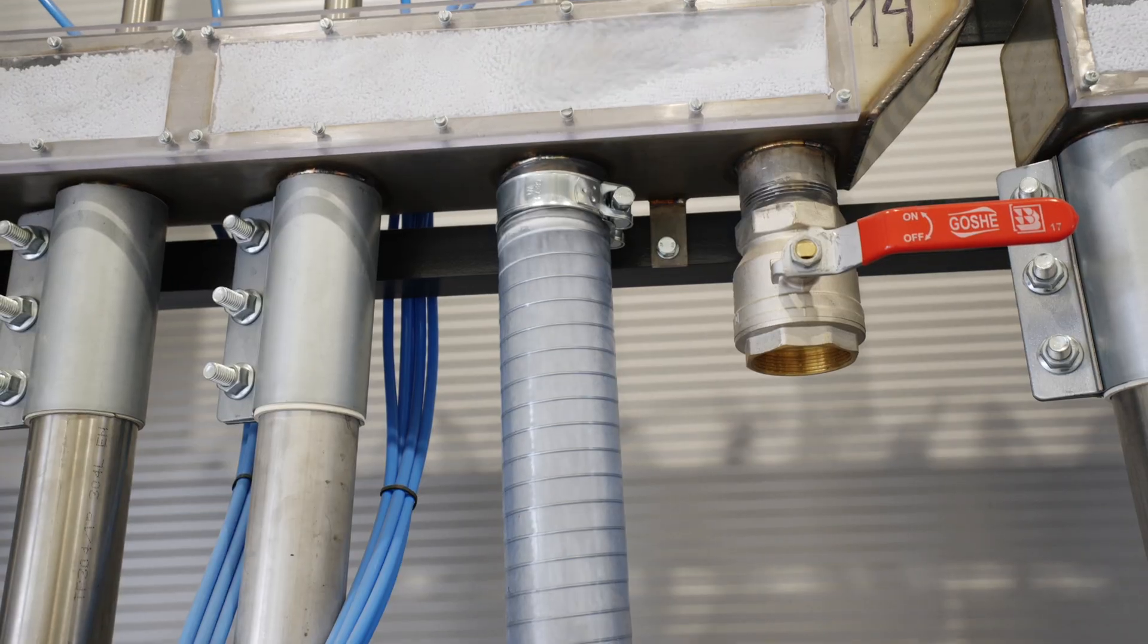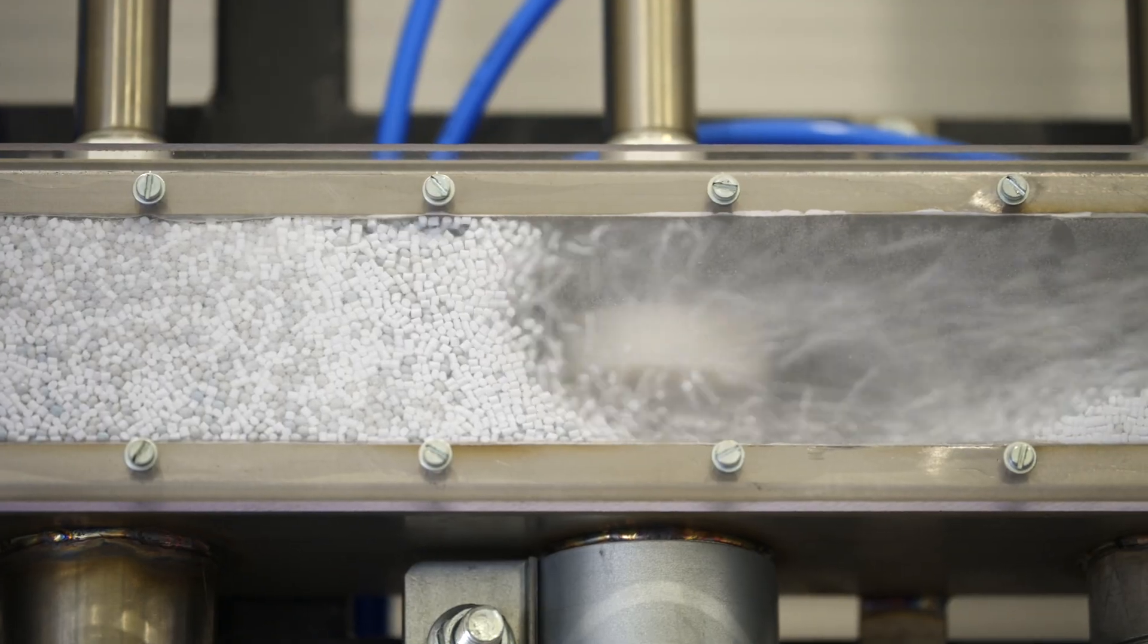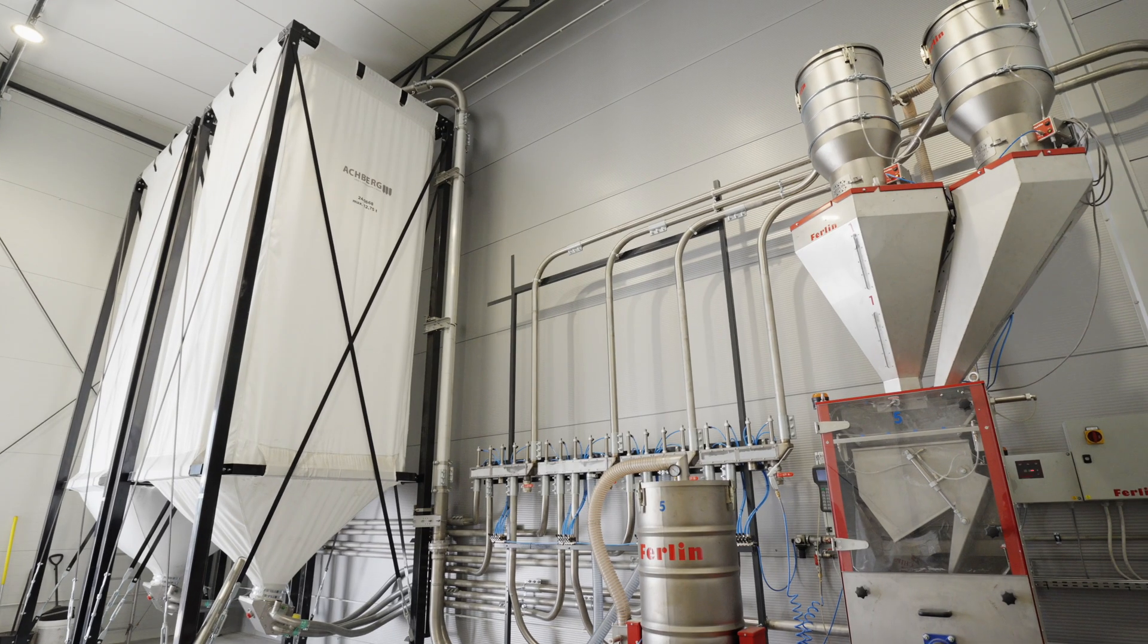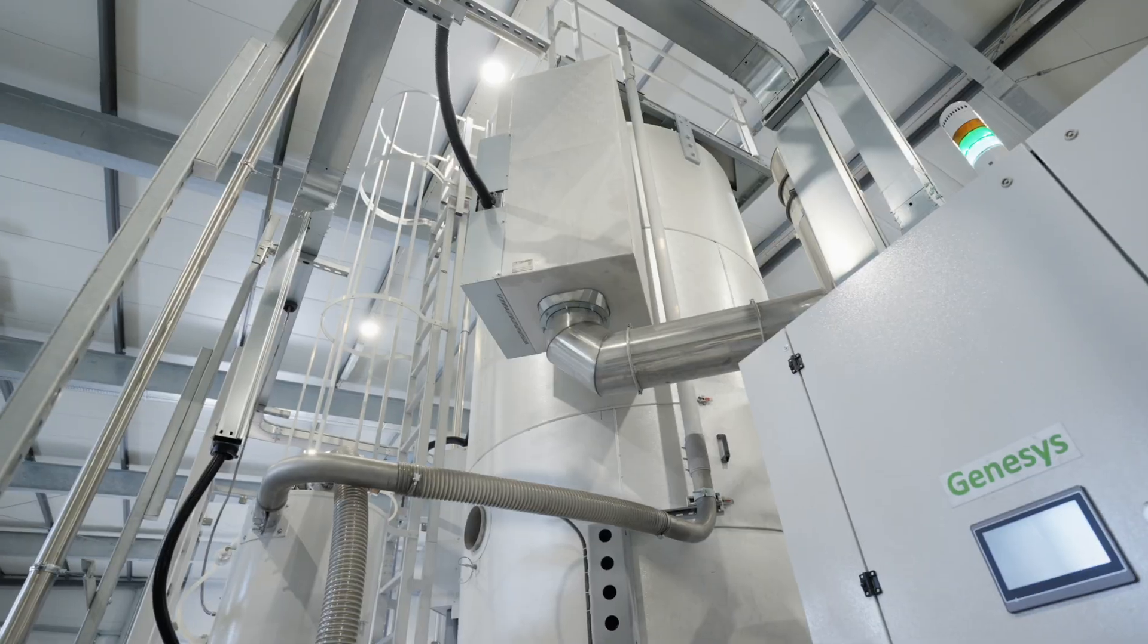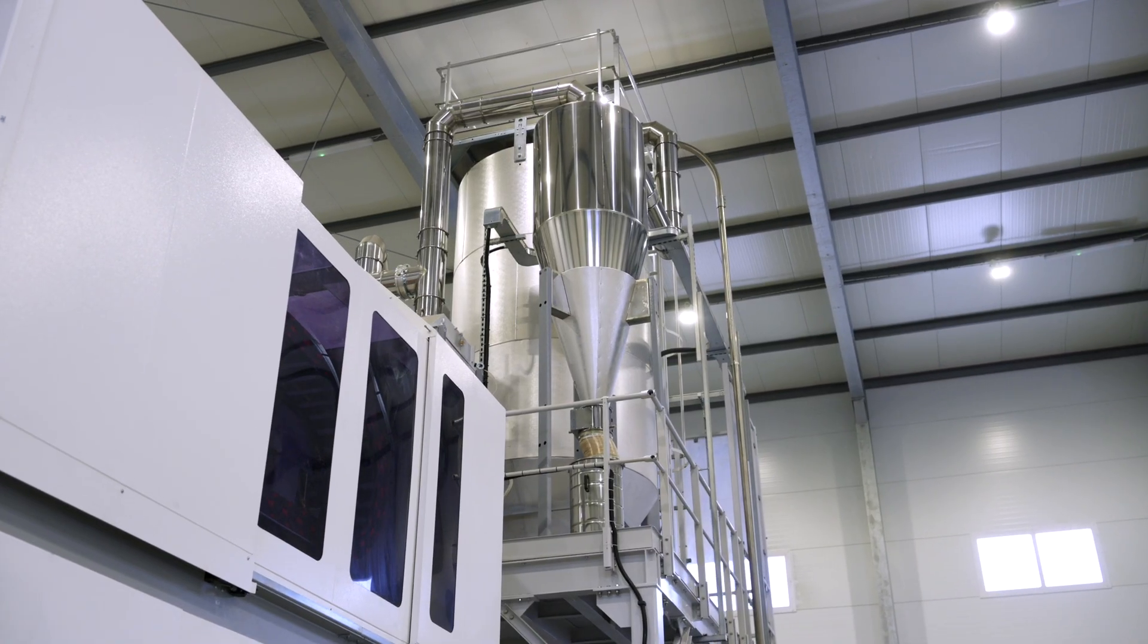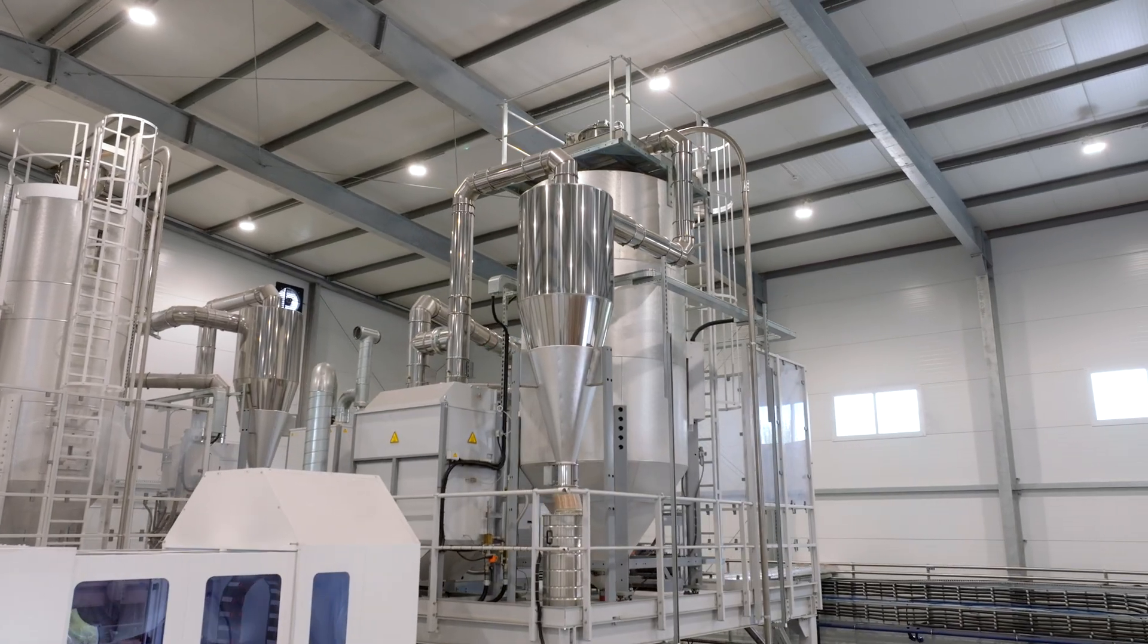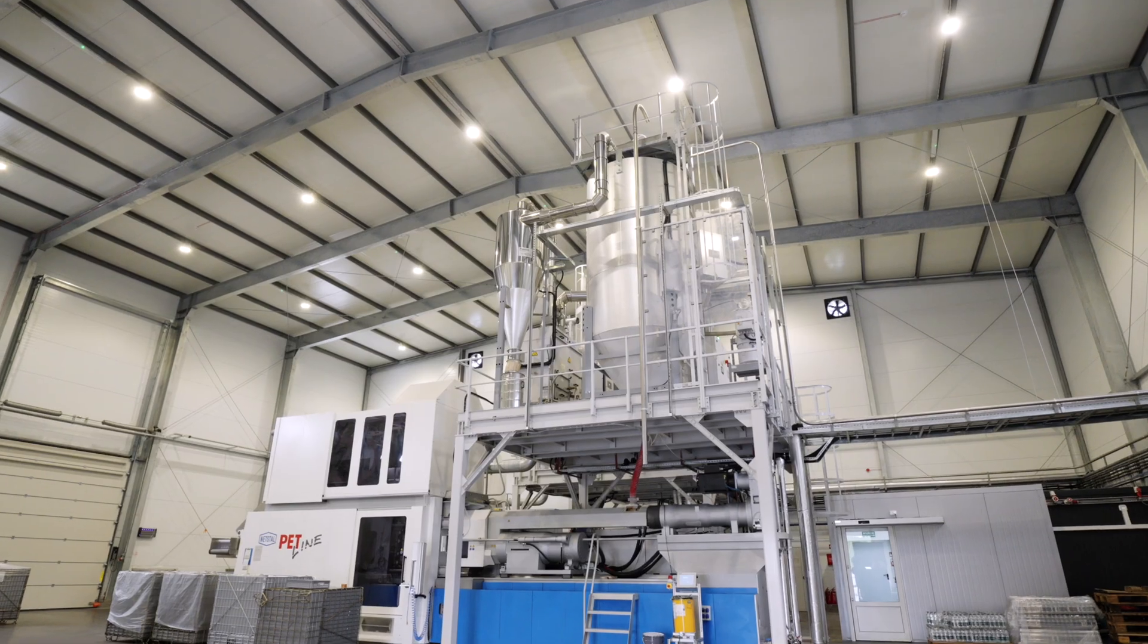If recycled granulate is used, the material is first transferred to a machine that weighs out required portions. Then the granulate is dried again and heated to 170 degrees Celsius. This takes about five hours. The plant can process up to 240 tons of granulate a day.